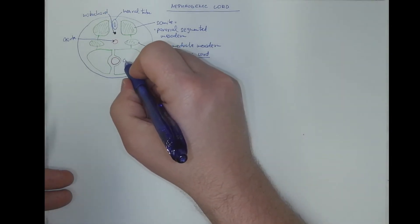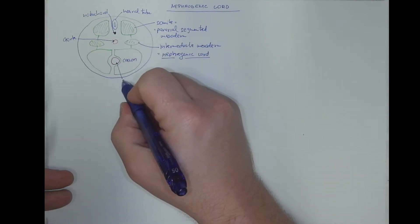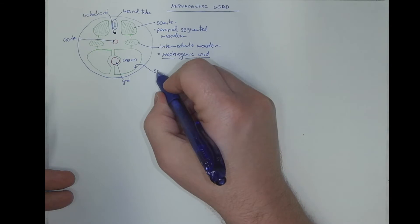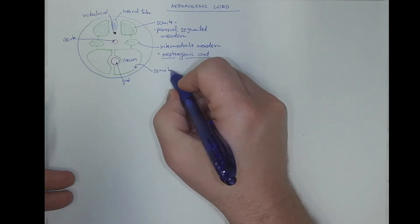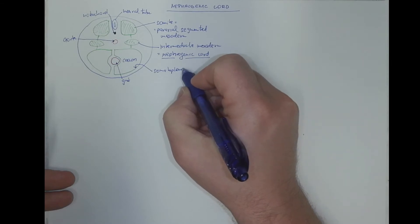And this is just to remind you of the fact that the coelom cavity surrounds the gut tube. And there are two layers of the lateral mesoderm, the parietal layer called somatopleuric mesoderm.